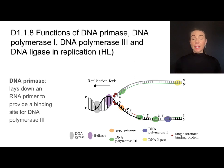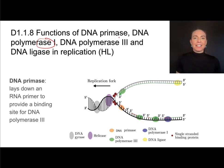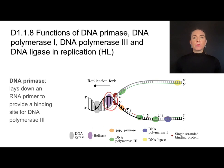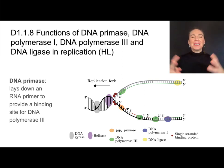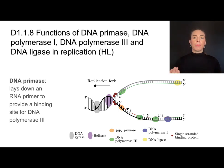DNA replication is highly dependent on several enzymes — helpfully, they all end in the suffix -ase. One key enzyme is helicase, covered at the standard level, which breaks hydrogen bonds to separate the parent strands. DNA primase is an enzyme that lays down a primer — a short segment of RNA nucleotides that acts as a signaling molecule telling enzymes where to start the replication process. That primer is very important, as it tells DNA polymerase where to begin synthesizing the new strand.